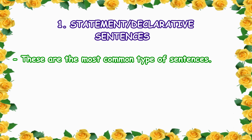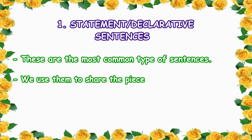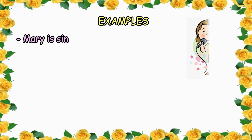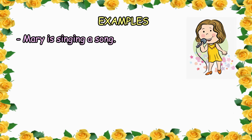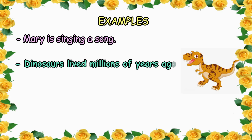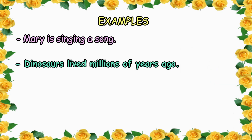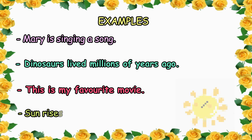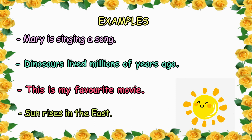Our first type is statement or declarative sentences. These are the most common type of sentences. We use them to share a piece of information or fact. Statement sentences end with full stops. For example: Mary is singing a song — this is a statement sentence because we are sharing a piece of information. Dinosaurs lived millions of years ago — this is a statement sentence because we are sharing a fact.